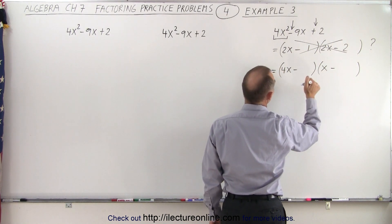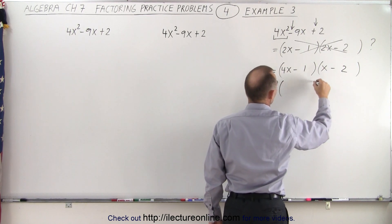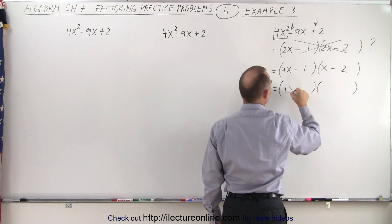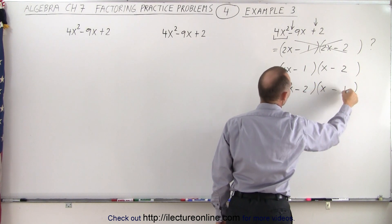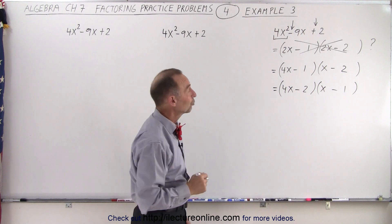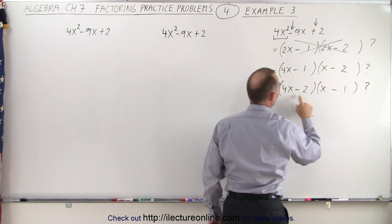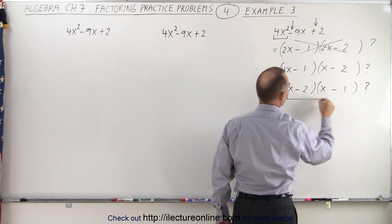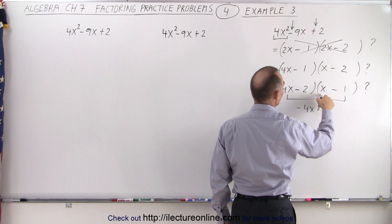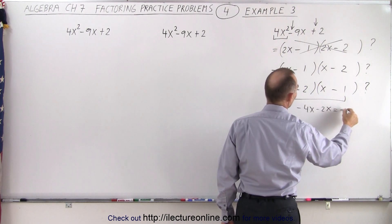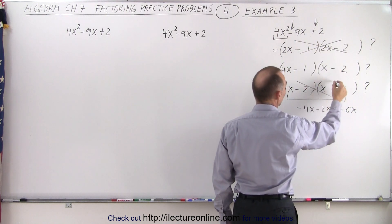So what we have left now is we either put a 1 there and a 2 there, or we could have it as 4x and x, a minus and a minus, we'll put the 2 here and the 1 there. Let's see which of those two is correct. If we take a look at this one, notice that 4x times negative 1 gives us negative 4x, and minus 2 times x gives us minus 2x, which is equal to minus 6x, which is not minus 9x. So this also doesn't work.